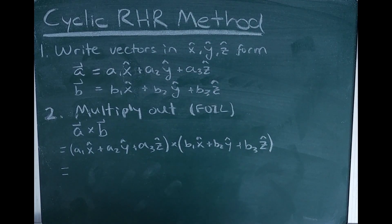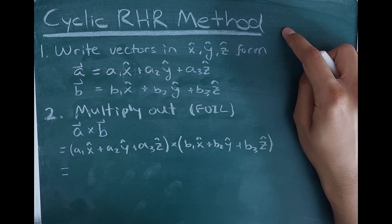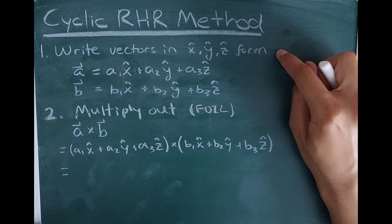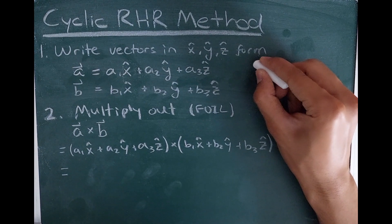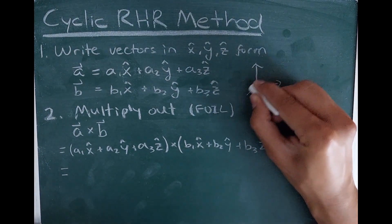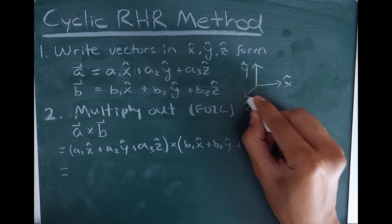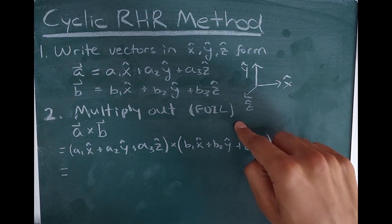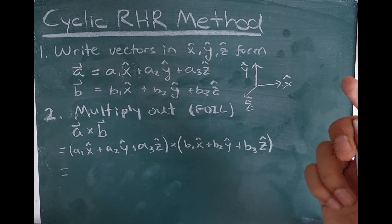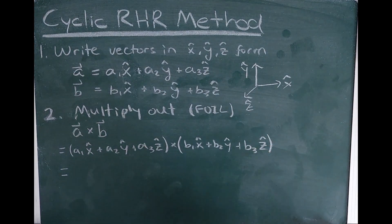This next method for calculating the cross product is what I'll call the cyclic right-hand rule method. It's less commonly taught, but what you're going to do is write out your vectors in x-hat, y-hat, z-hat form for some coordinate system you've defined — here I'll use a standard right-hand coordinate system. Then you take these two vectors and treat them kind of like polynomials: you multiply them out and FOIL them.